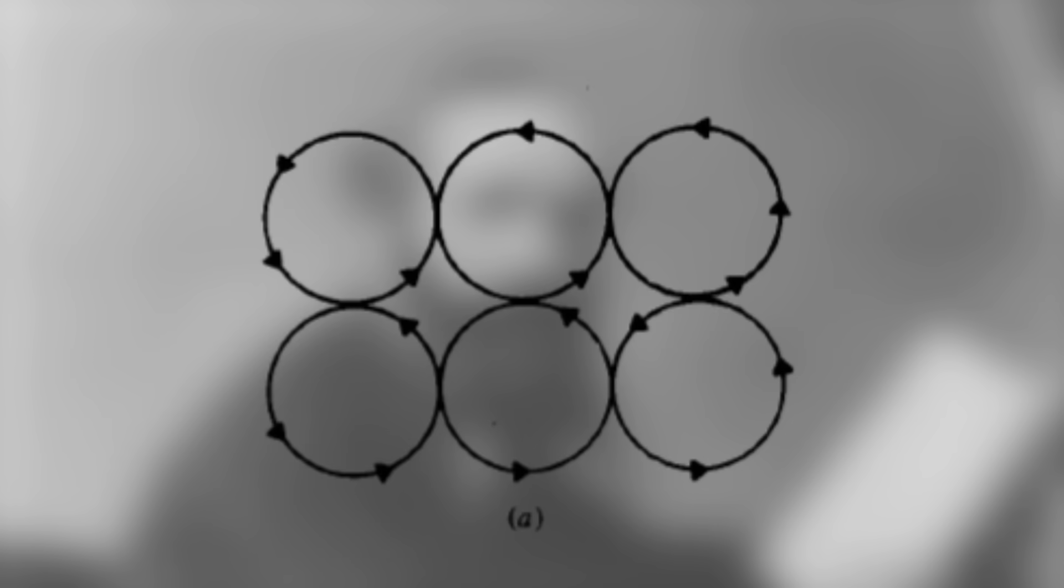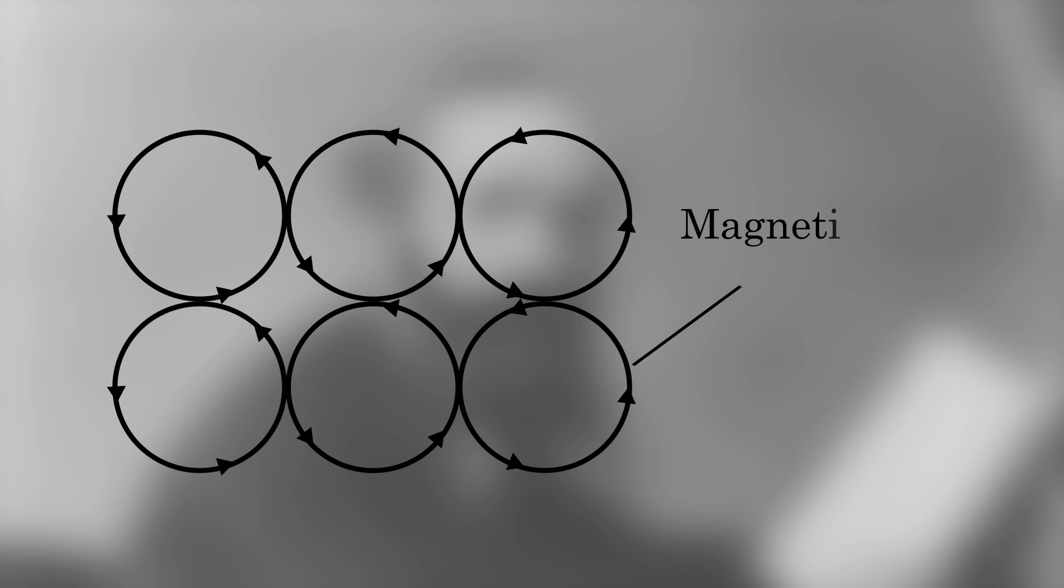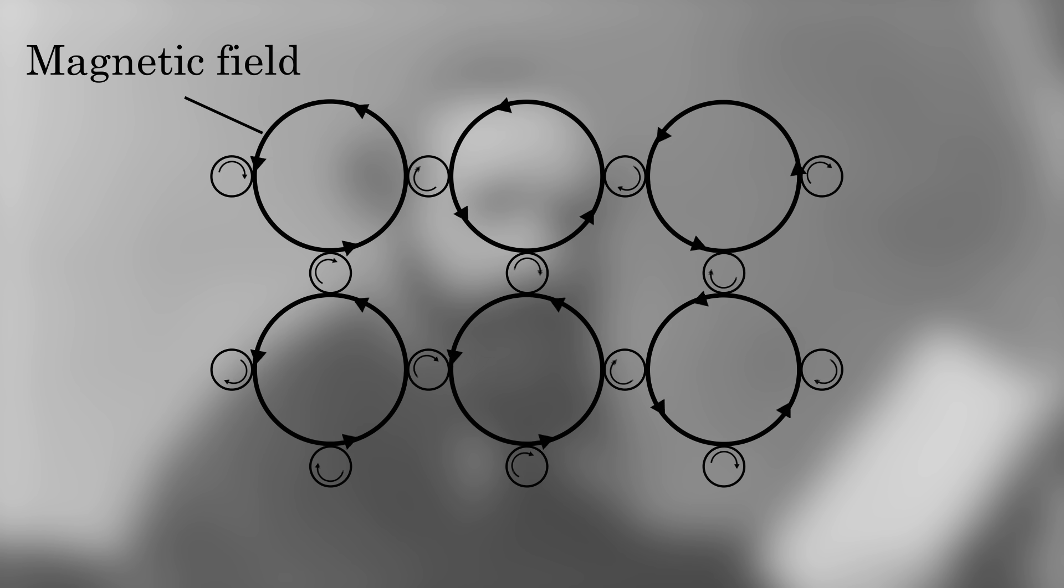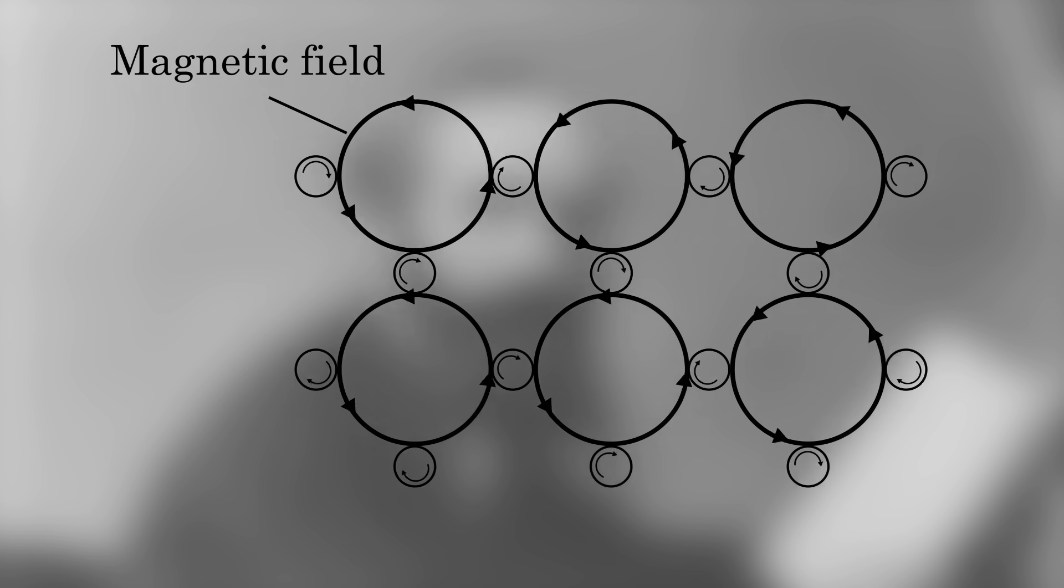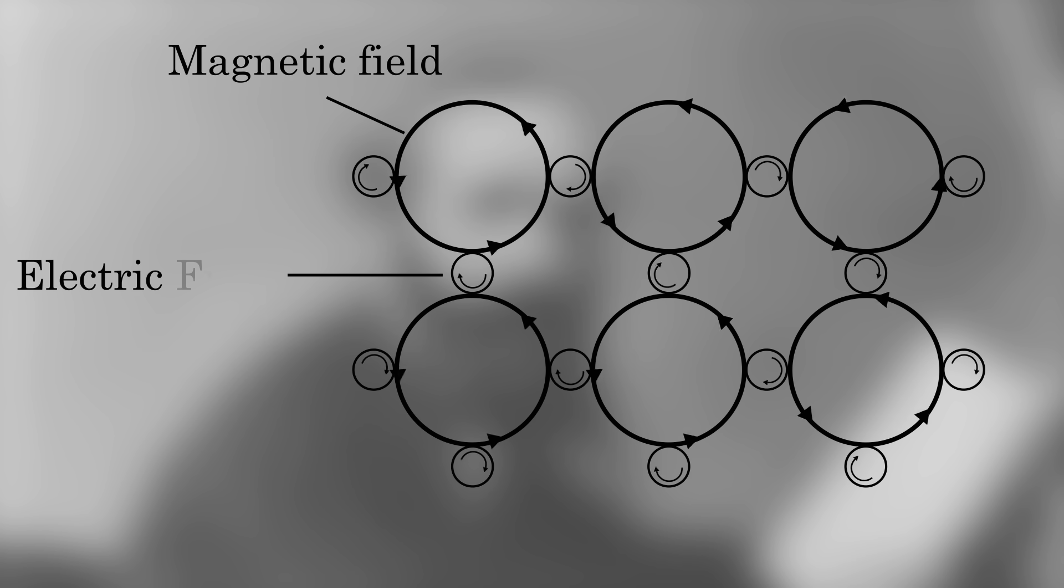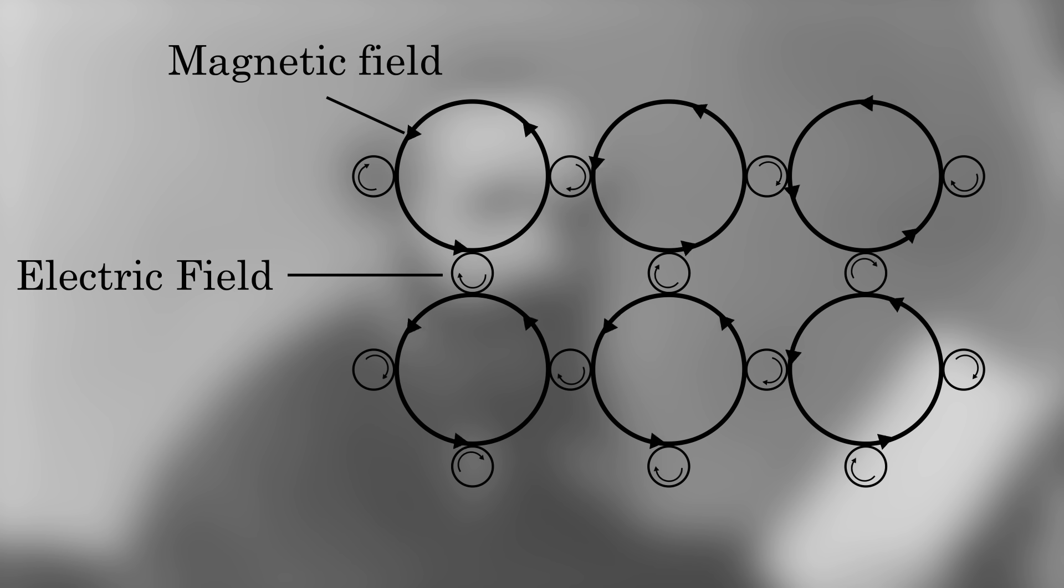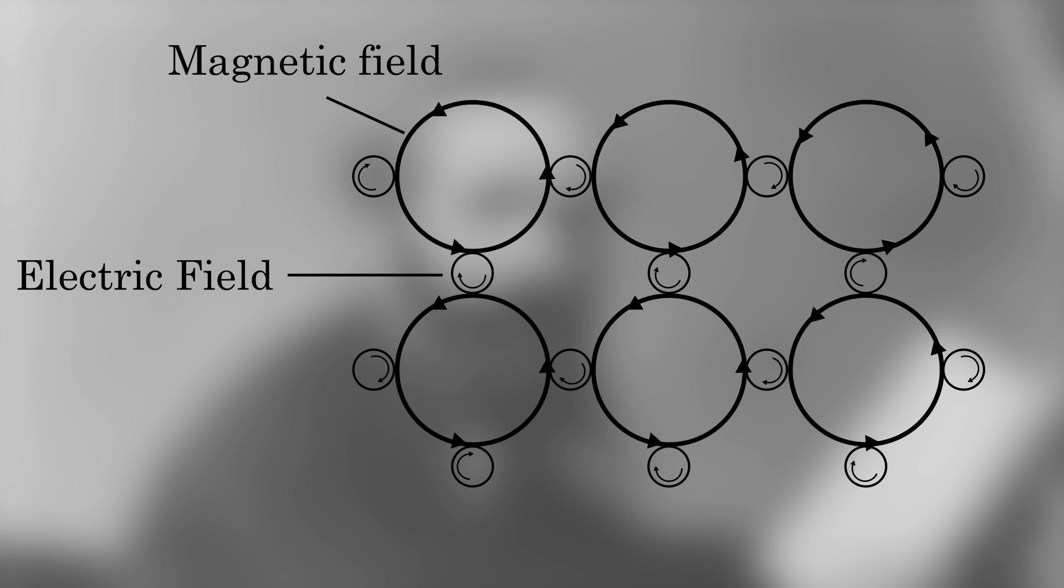He began with a model in which the whole space was filled with vortex tubes. This vortex tube represents the magnetic field, and the greater the velocity of the tube, the stronger the magnetic field. But there was an immediate problem. These rotating vortex tubes would experience friction, causing them to lose energy. Maxwell adopted a practical solution by inserting ball bearings between the vortices, which he identified as electric particles. When these ball bearings are free to move, they carry an electric current. In conductors, these electric particles are free to move, whereas in insulators, they are fixed.